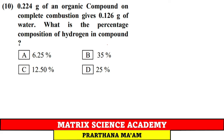Question 10: 0.224 gram of an organic compound on complete combustion gives 0.126 gram of water. What is the percentage composition of hydrogen? This is analytical chemistry / percentage composition, which is from the reduced syllabus, so this question can be skipped.